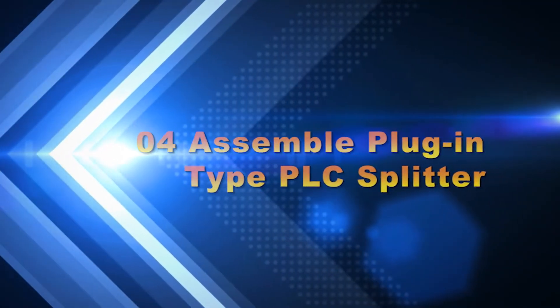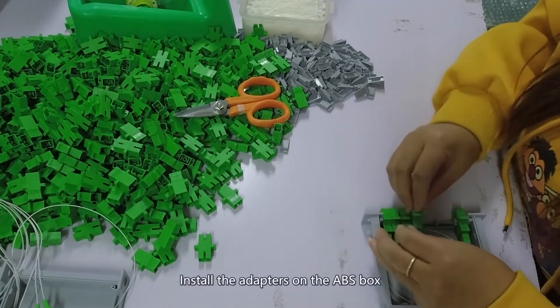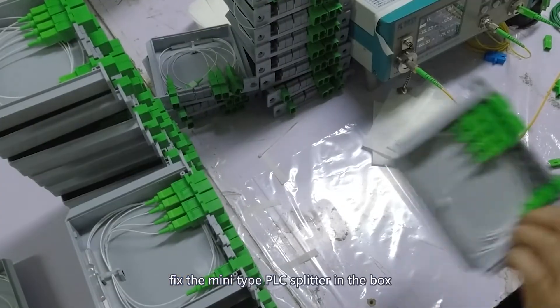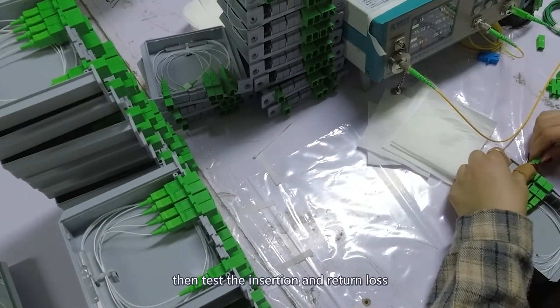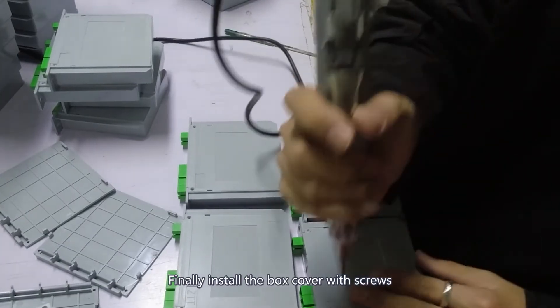Part 4: A simple plug-in type PLC splitter. Install the adapter on the ABS box. Fix the mini-type PLC splitter in the box. Then test insertion and return loss. Finally install the box cover with screws.